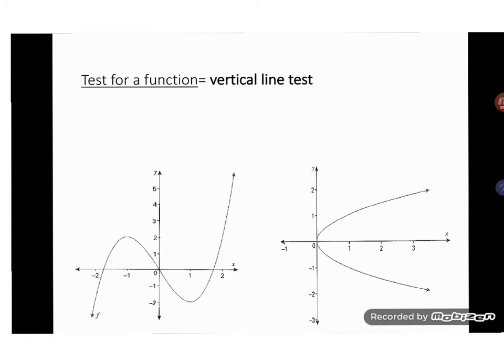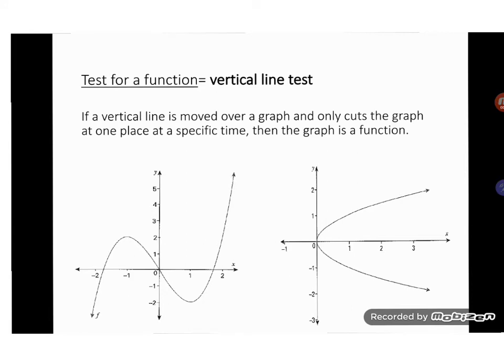Then there is a test for a function, and it is called the vertical line test. If a vertical line is moved over the graph and only cuts the graph at one place at a specific time, then this graph is a function. If we have a look at our first graph and we draw a vertical line, it is clear that it only touches the graph at one place at a time.